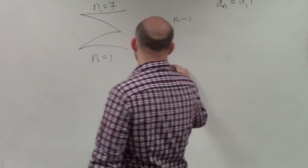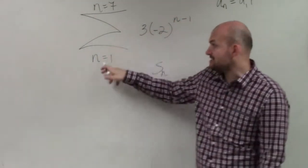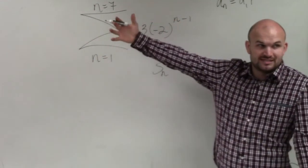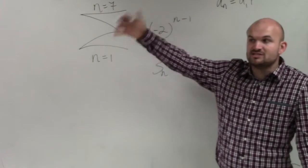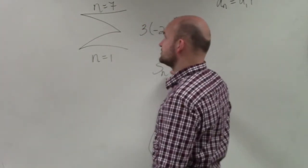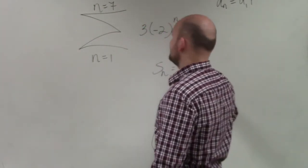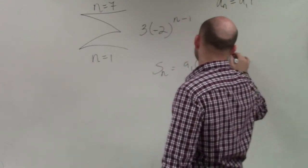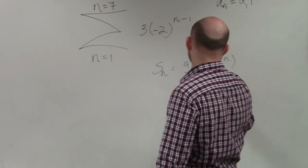So the sum of a finite series, right, because it has a start and it has an end. We're only adding the sum for seven terms. So s of n equals a sub 1 times 1 minus r raised to the n divided by 1 minus r.